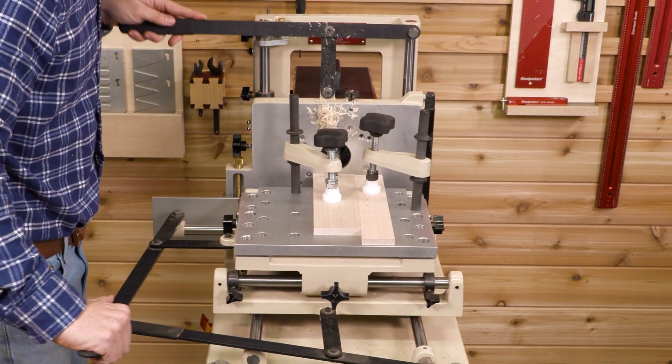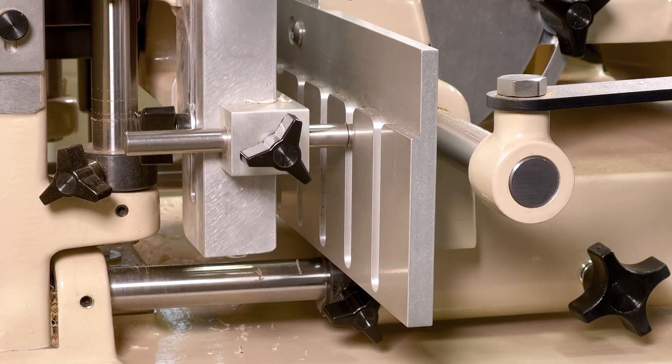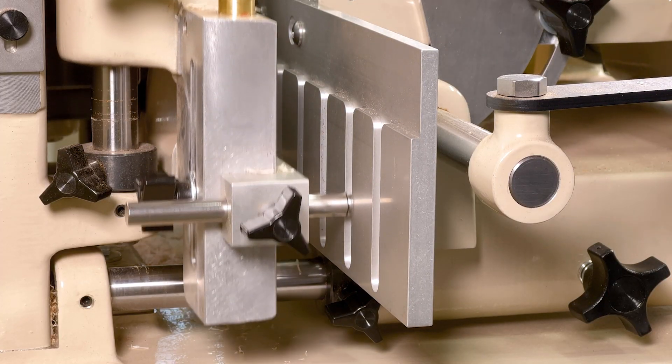Move the horizontal table left and right and the vertical table up and down. Follow the template until all of the tails on your workpiece are cut.